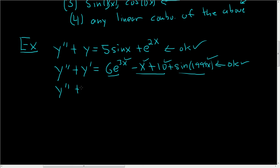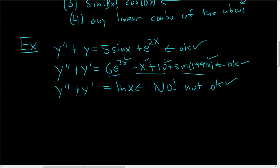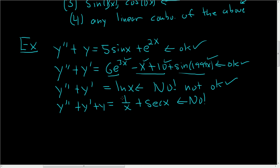What about y'' + y' = ln(x)? In this case, this is no — not okay. We cannot use the method of undetermined coefficients here. You would probably use something like variation of parameters. What about 1/x plus secant(x)? This would also be a no — you cannot use undetermined coefficients.